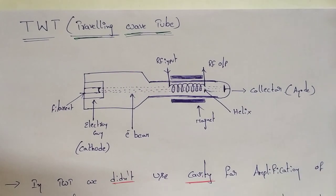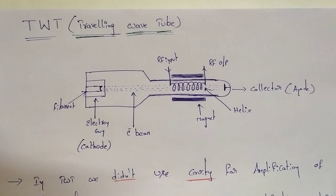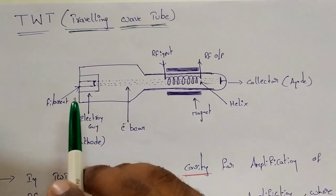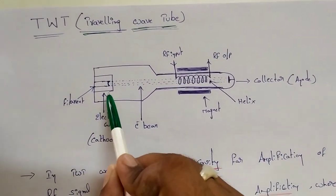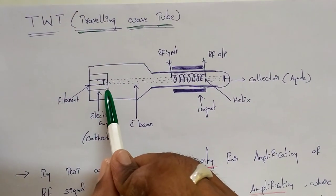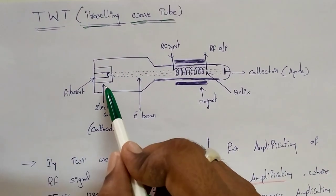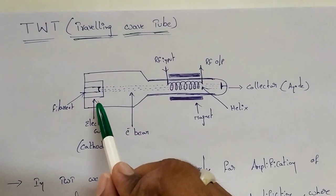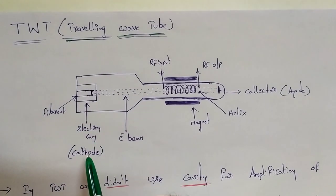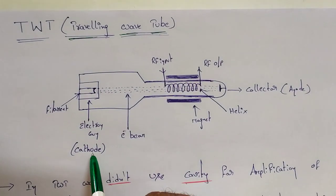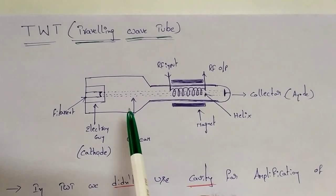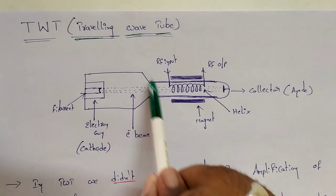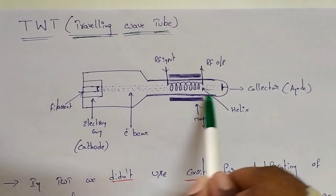TWT uses a cavity. It is designed such that if it is an electron, it is a negative charge. So it is called a cathode.